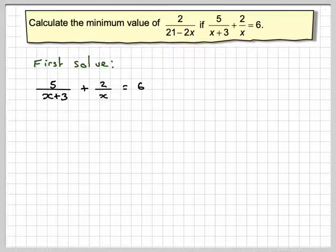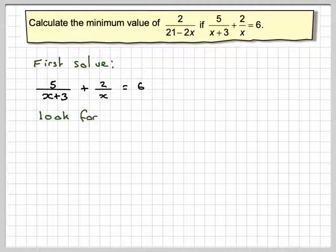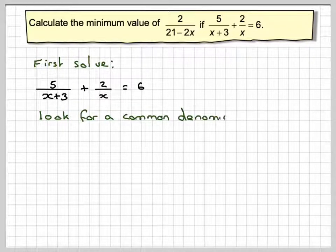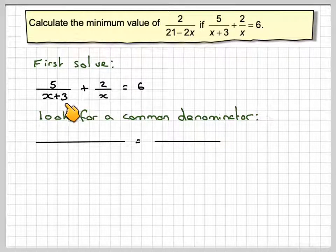So in order to solve this type of equation, we've got to look for a common denominator. So it's going to be x over x times x plus 3 and we're going to put everything over x times x plus 3.